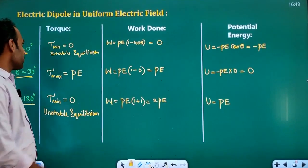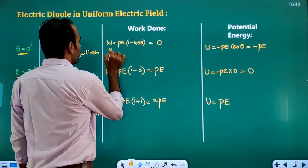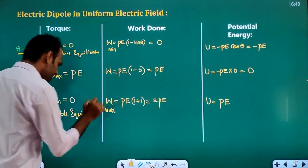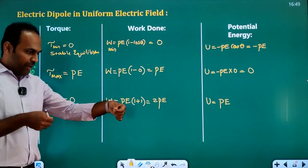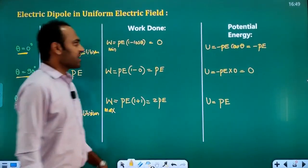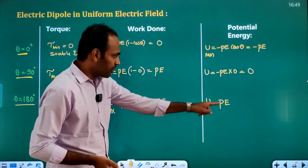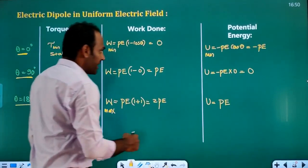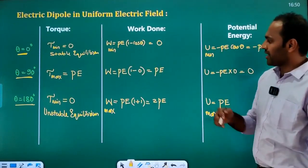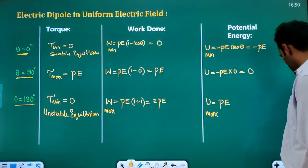Looking at the pattern: work done is minimum (0) at theta = 0 degrees and maximum (2PE) at theta = 180 degrees. Potential energy is minimum (minus PE) at theta = 0 degrees and maximum (plus PE) at theta = 180 degrees. So both work done and potential energy are minimum at 0 degrees and maximum at 180 degrees.